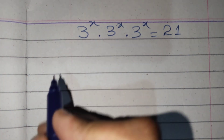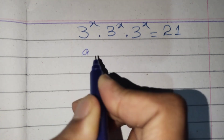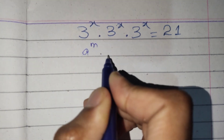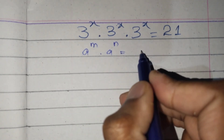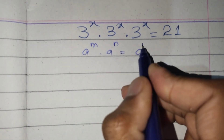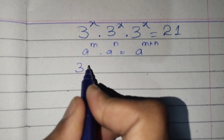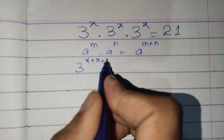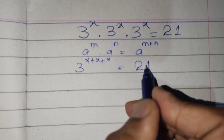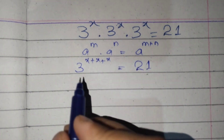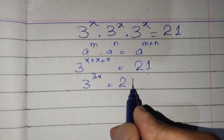We can write this by using a formula: a raised to the power m, times a raised to the power n — having the same base — means the powers add up, giving a^(m+n). So it becomes 3 raised to the power x plus x plus x, which equals 3 raised to the power 3x, equals 21.